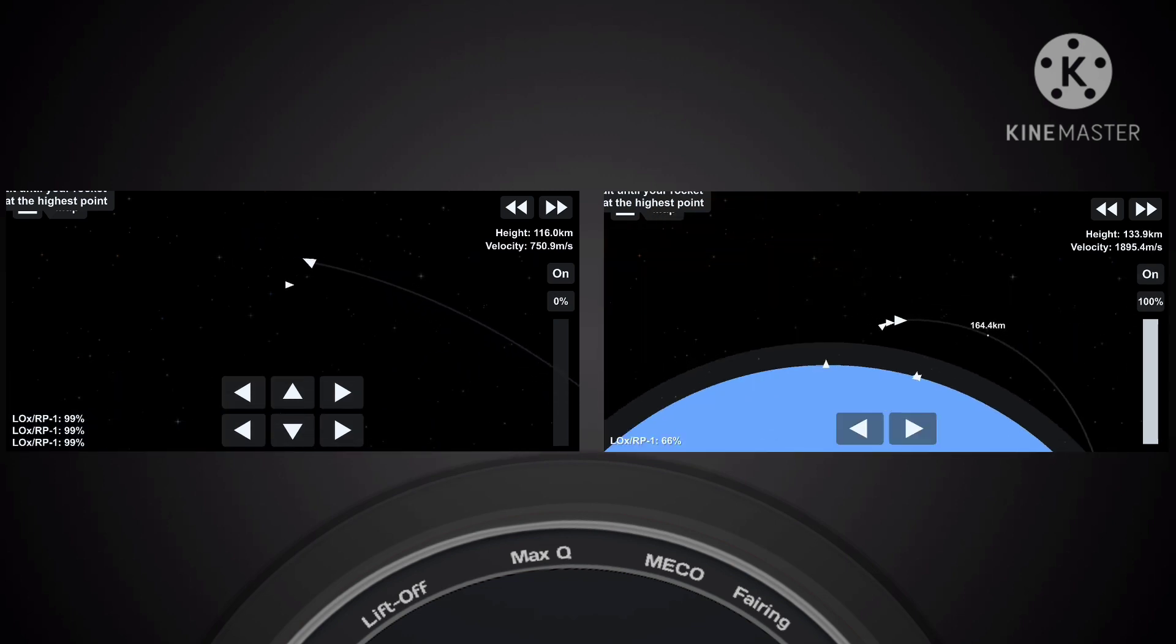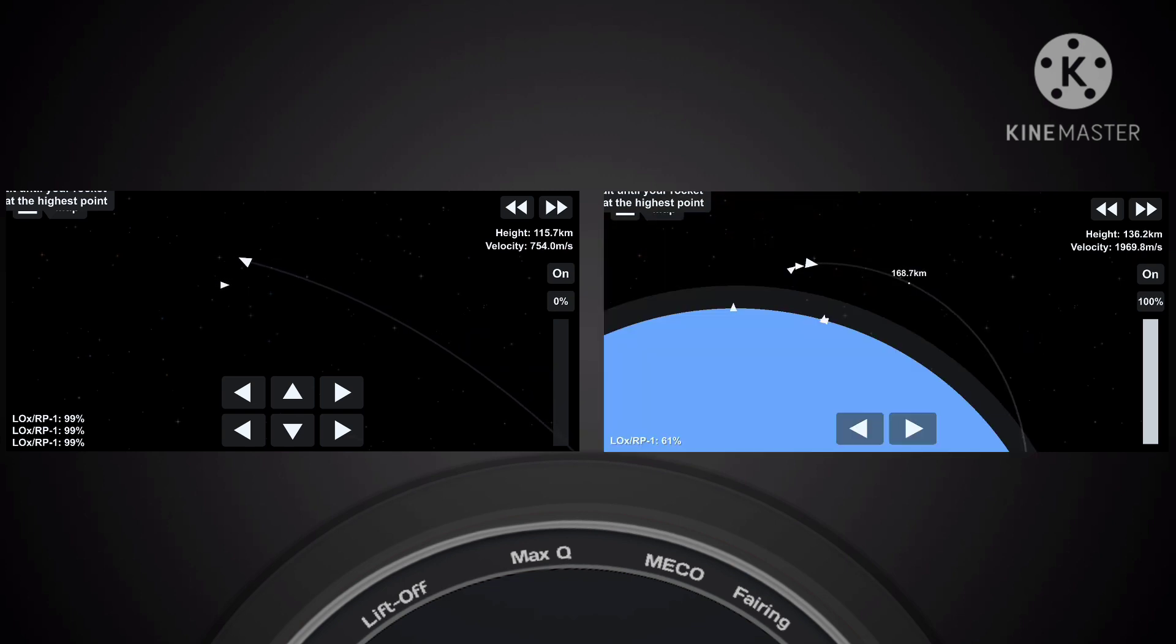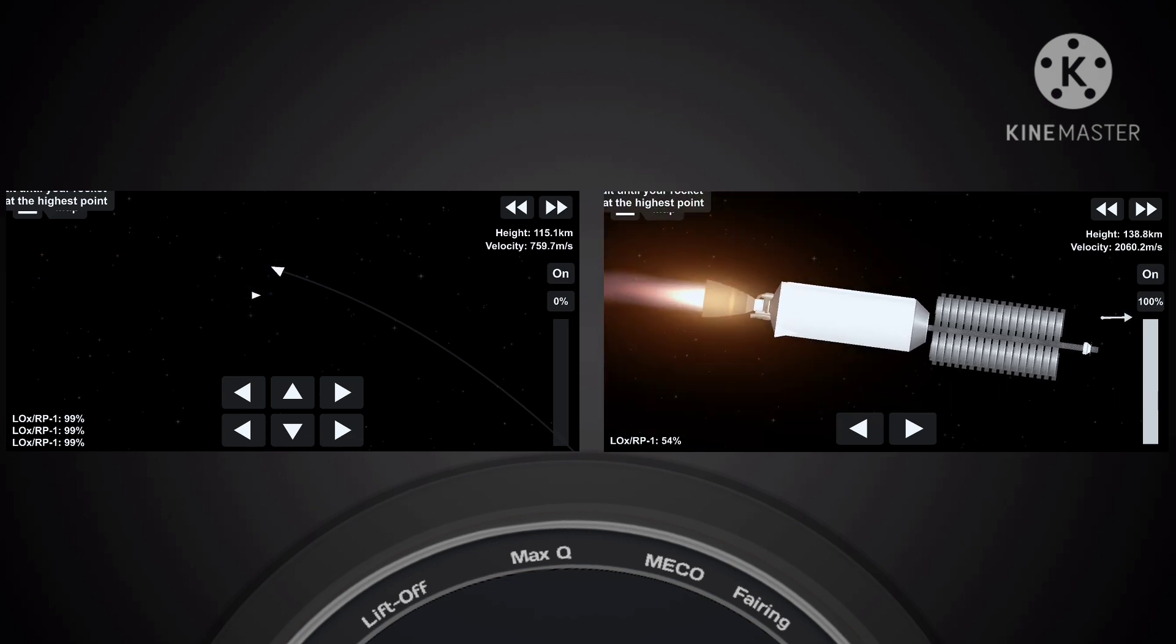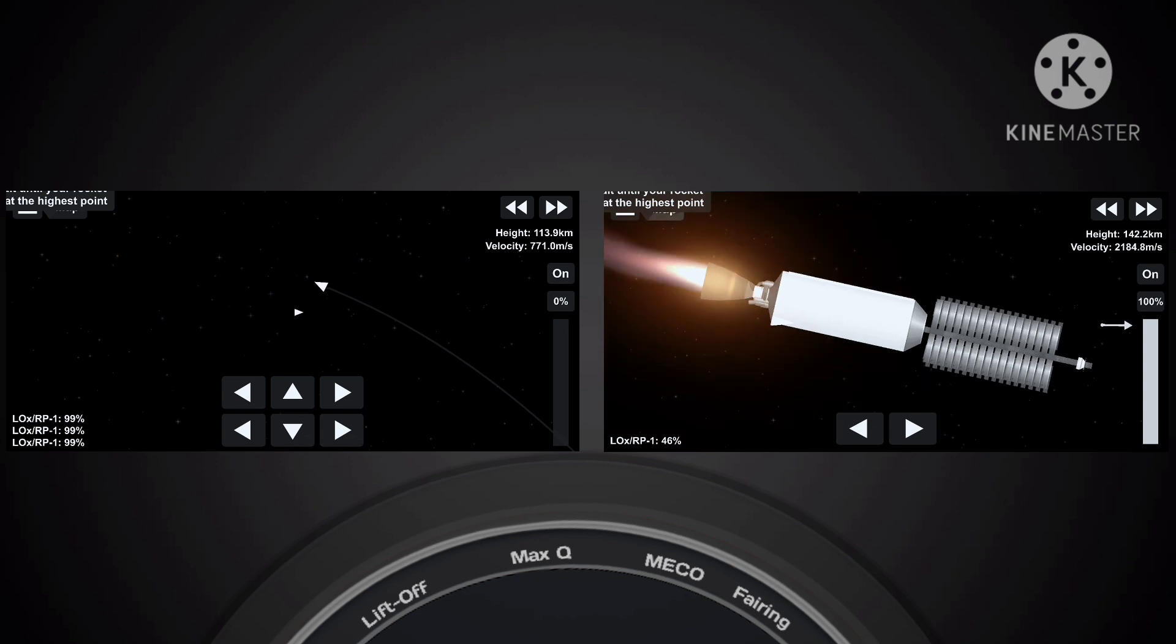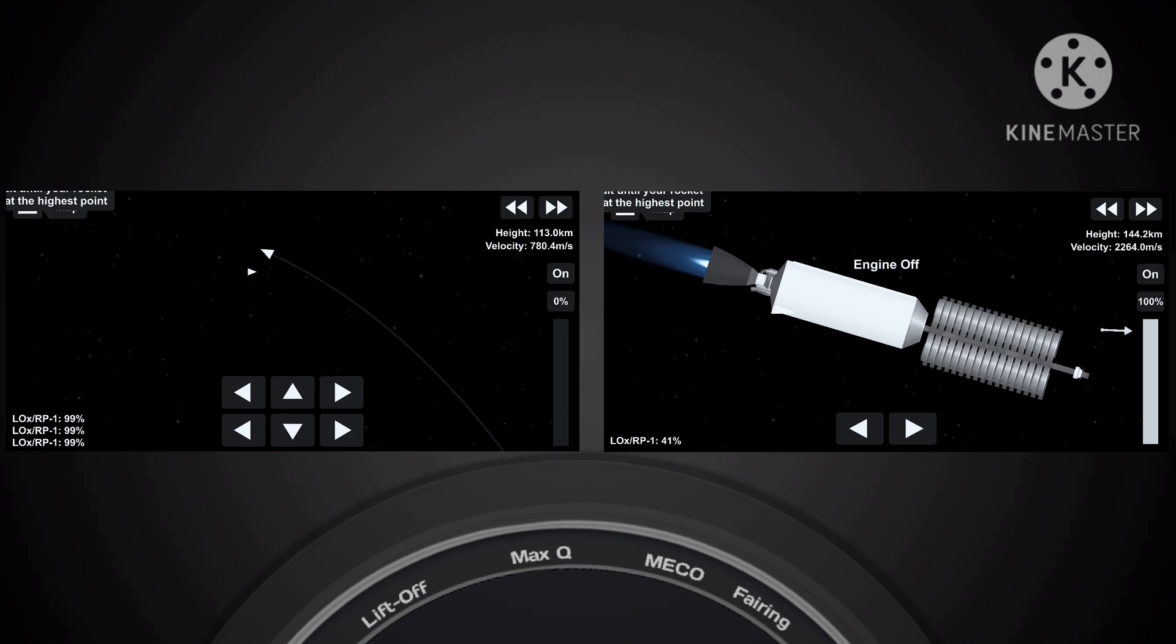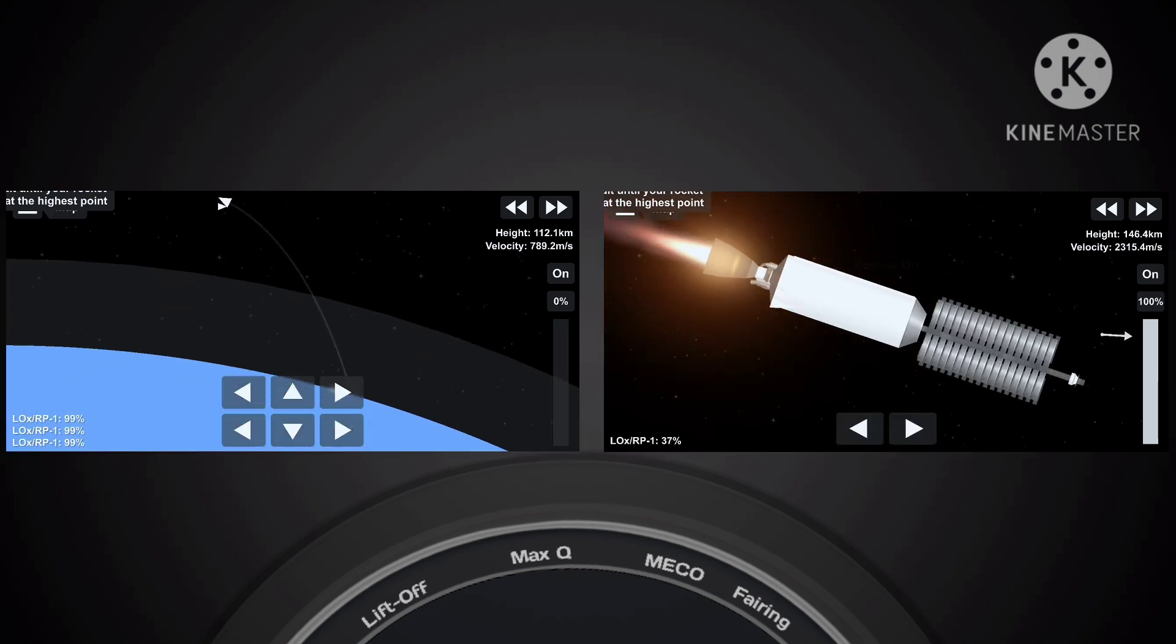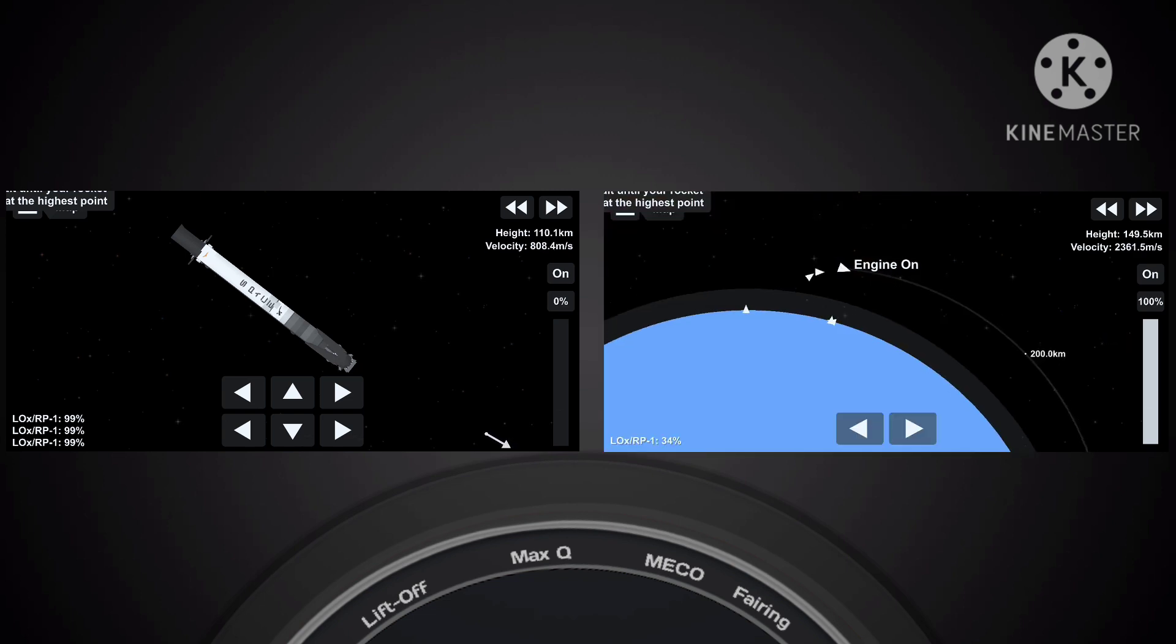For today, the landing zone is Just Read the Instructions, which is currently out in the middle of the ocean waiting for this booster to come back. Stage two is looking good and nominal. Stage two is taking our Starlink payload to its targeted orbit. These 60 Starlink satellites will join the constellation already on orbit, designed to provide high-speed, low-latency internet to people on Earth, especially to places where good internet is hard to access.